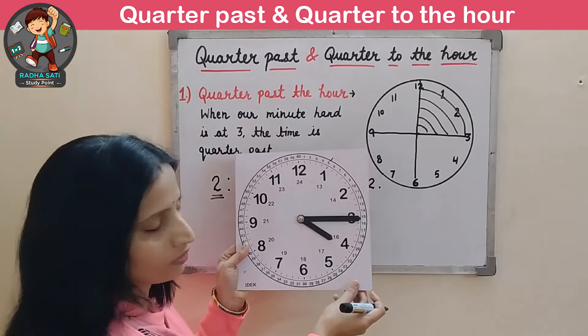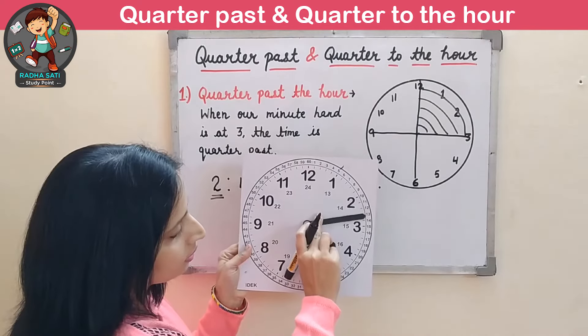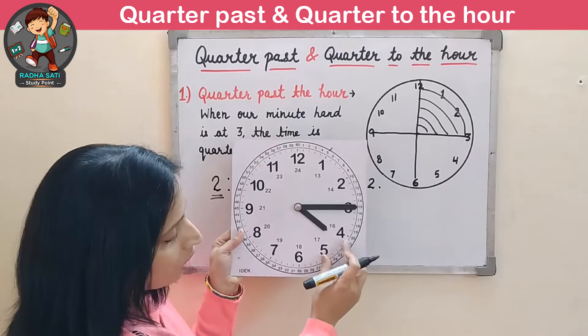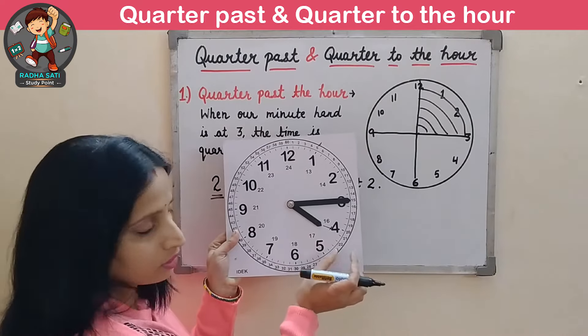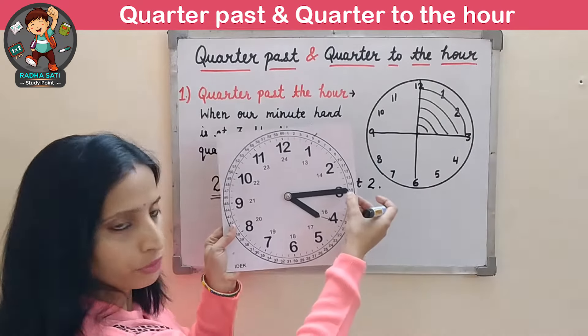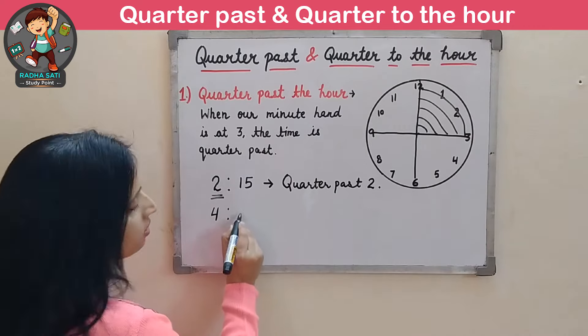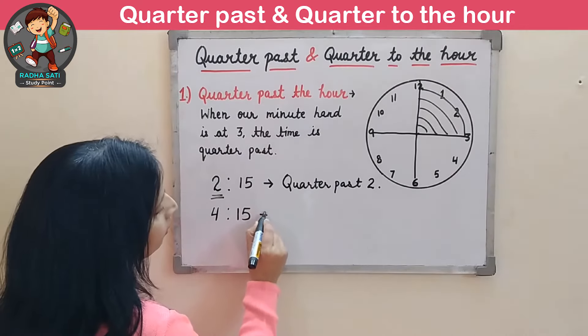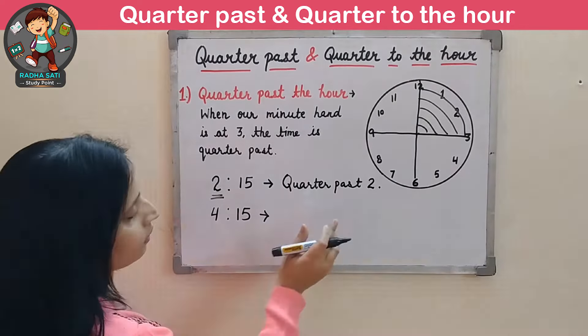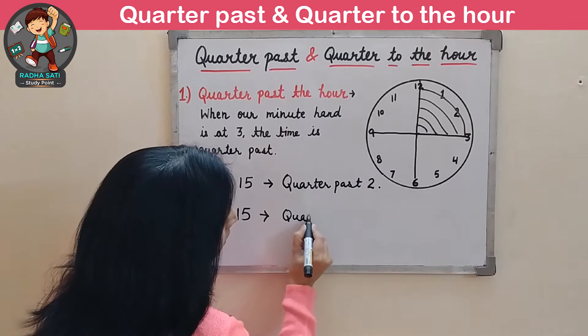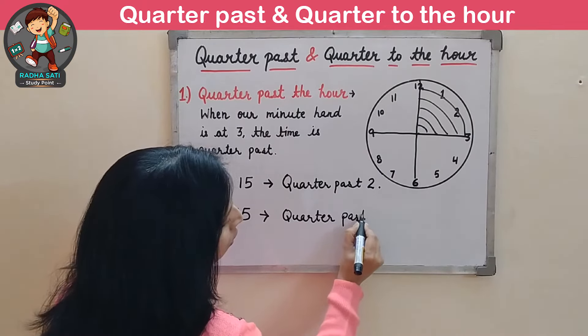Let's take another example. Our minute hand is again at 3, meaning the minute hand has crossed one quarter. The hour hand is between 4 and 5, but it is closer to 4. That's why we read this time as 4:15. And in words, we write quarter past 4, because the hour hand has just passed number 4.